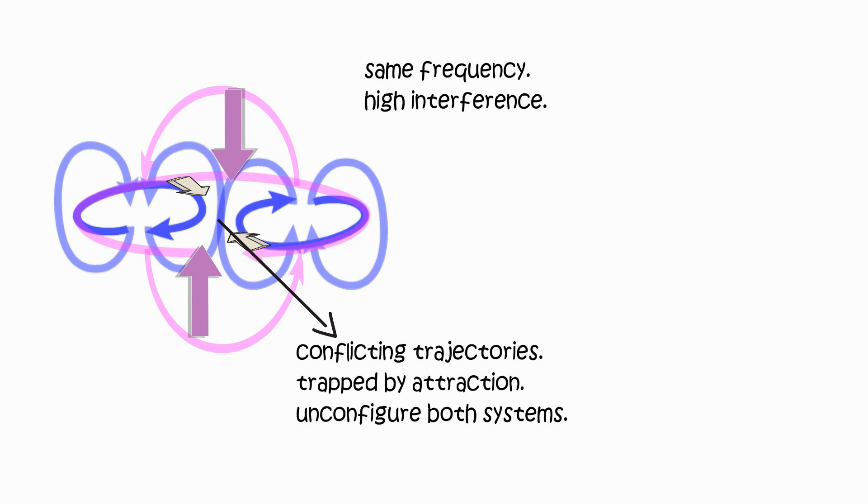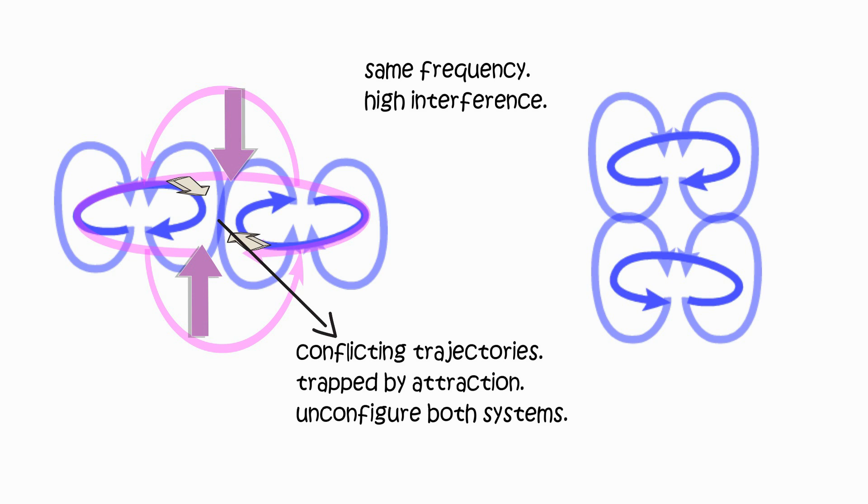Matter and antimatter counterparts have same frequency, causing high interference. Interference is stronger than synch-equilibrium, cannot regenerate fast enough, cannot repel enough, resulting in the total unconfiguration of both when close enough.